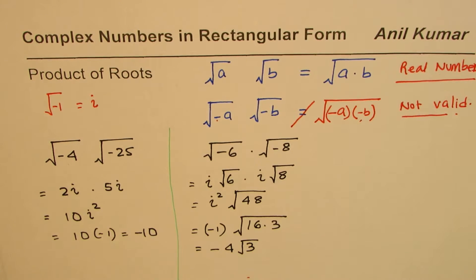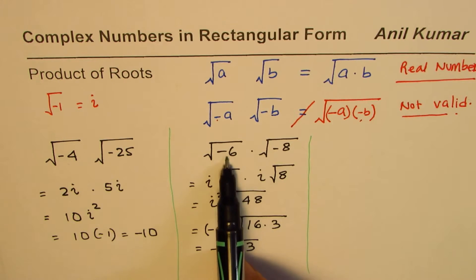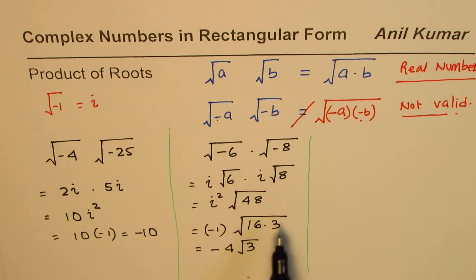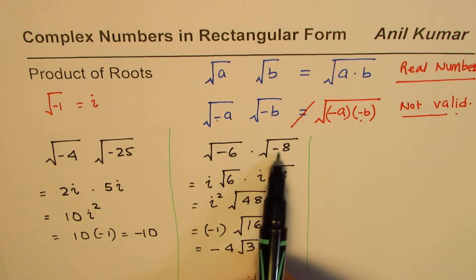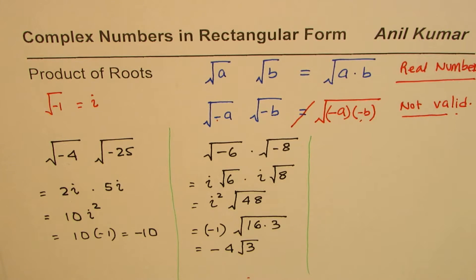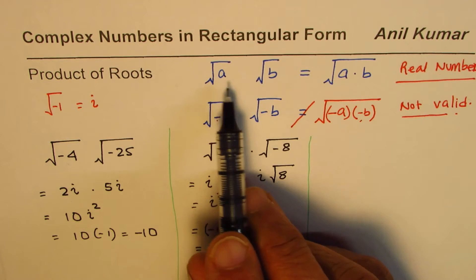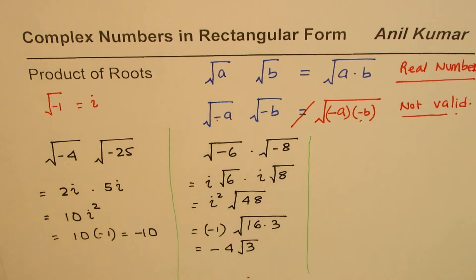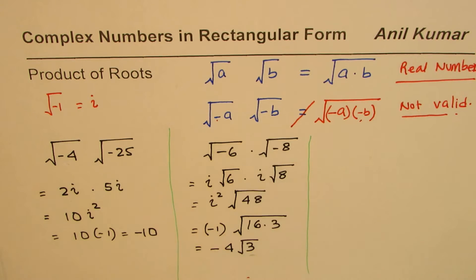If you had multiplied the two numbers directly you would have gotten positive 48, missing the negative sign — that multiplication would have been wrong. The rule of multiplying inside a radical sign is only valid when we do not have negative signs inside. That is very important to understand.